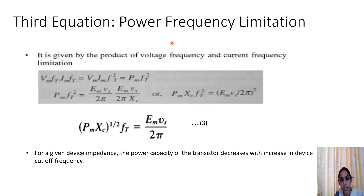The third equation is the power-frequency limitation, given by the product of the voltage-frequency and current-frequency limitations. Multiplying Vm·ft by Im·ft, and replacing Vm·Im with Pm (since power = voltage × current), we get Pm·ft² = (Em·Vs/2π) × (Em·Vs/(2π·Xc)). This gives the third equation: (Pm·Xc)^(1/2) × ft = Em·Vs/(2π). For a given device impedance, the power capacity of the transistor decreases with increasing cutoff frequency.